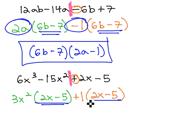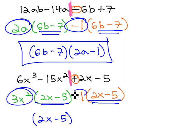This does work for us, giving us matching binomial factors. 2x minus 5 is our first factor, and finally, 3x squared plus 1 is our next factor.